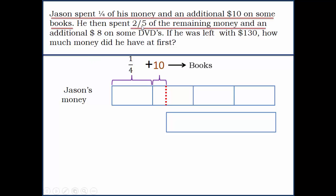He then spent two-fifths of the remaining money and an additional $8 on some DVDs. To make it clear, this is the remaining money, so we divide it into five parts. He's spending two parts of the five and an additional $8.